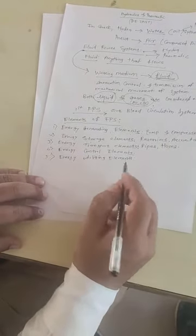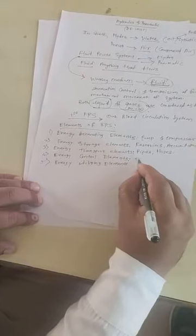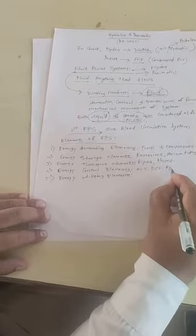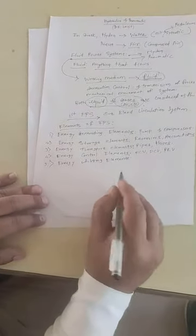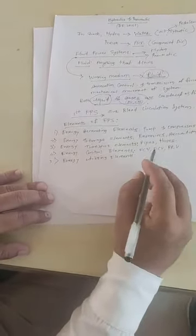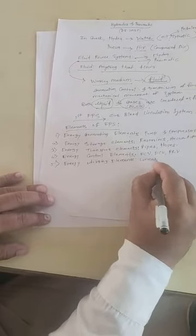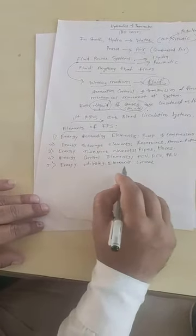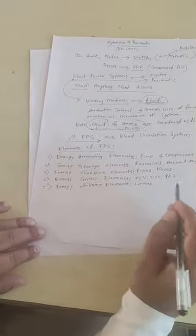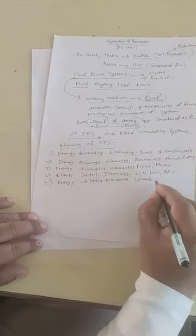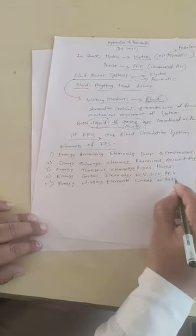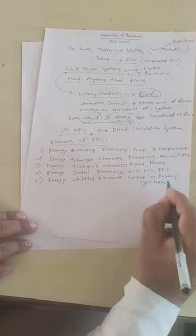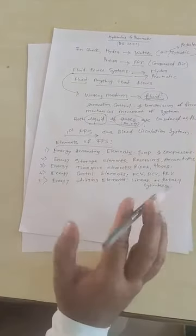Next, energy control elements, which includes flow control valves, direction control valves, and pressure relief valves. And the last one is energy utilizing elements, in which the pressurized energy of working fluid is used as mechanical movement of the system. This is a system in which different types of actuators are used for this purpose. Basically, there are two types: linear actuators and rotary actuators. This is the integral part of the fluid power system.